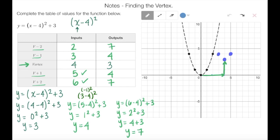Let's quickly check. 2 minus 4 squared, that's negative 2 squared. Negative 2 squared is also 4. So I now know that those points are done correctly.